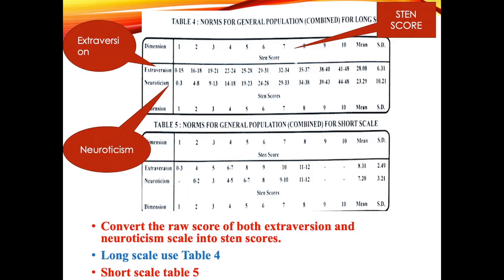The next step is to convert the raw scores of both the extroversion and neuroticism scales into Sten scores. If you used the long form, use Table 4; if you used the short form, use Table 5. For example, if you used the long form and the extroversion score is 27, it falls under a Sten score of 5. So the Sten score for extroversion is 5. Similarly, if your neuroticism score is 40, it falls under a Sten score of 9, so the Sten score for neuroticism will be 9.